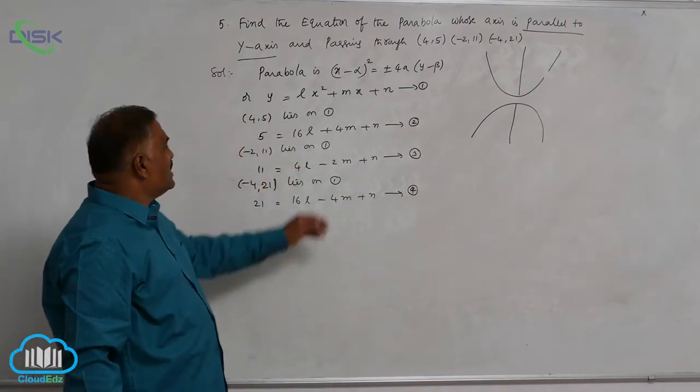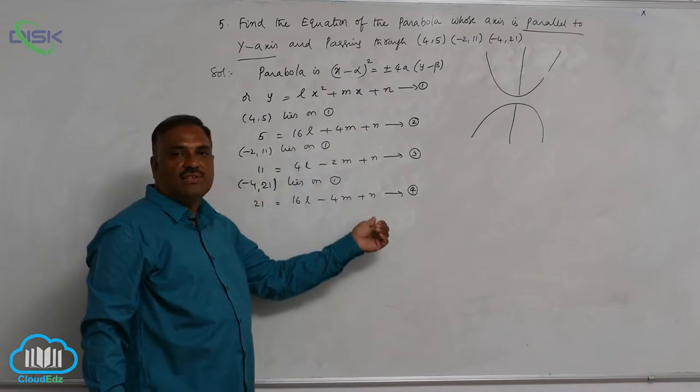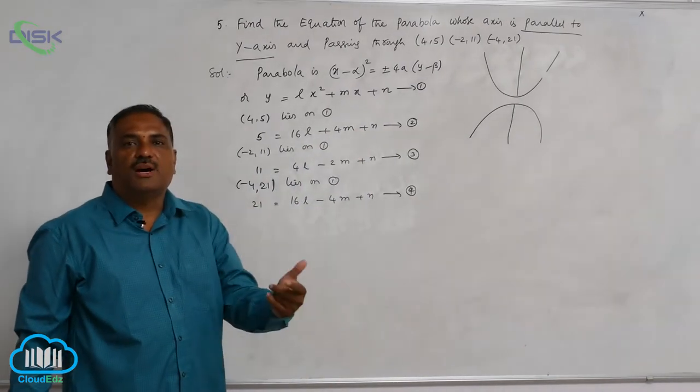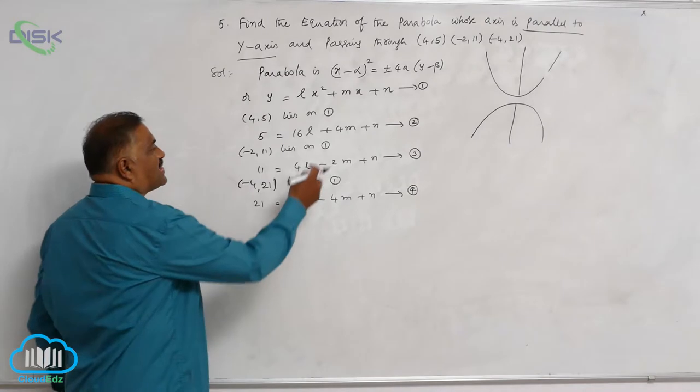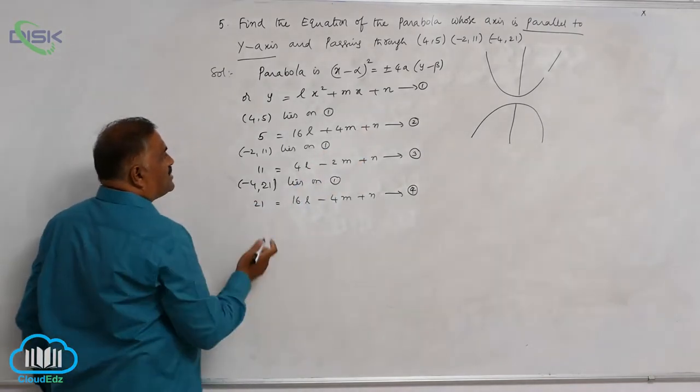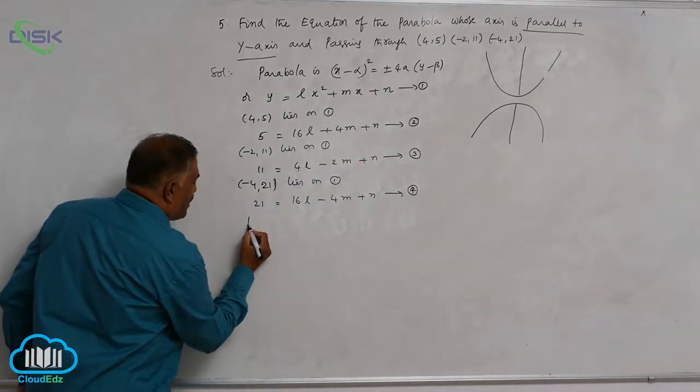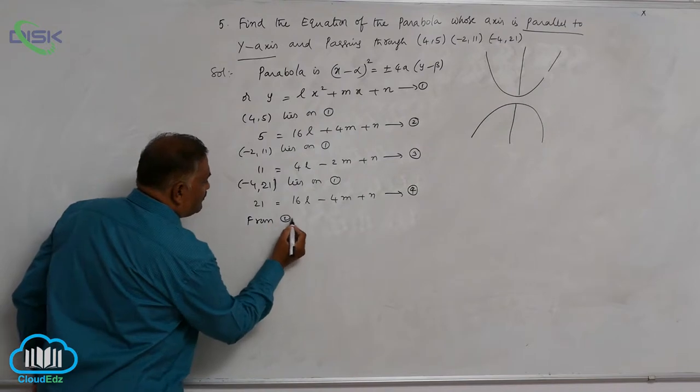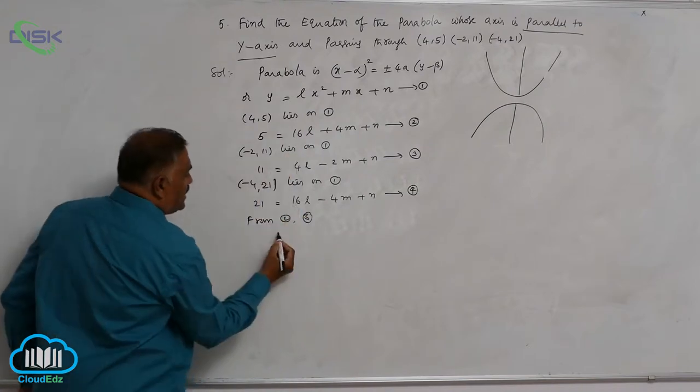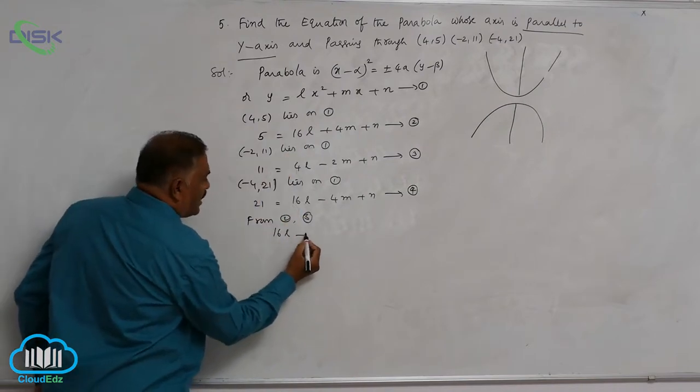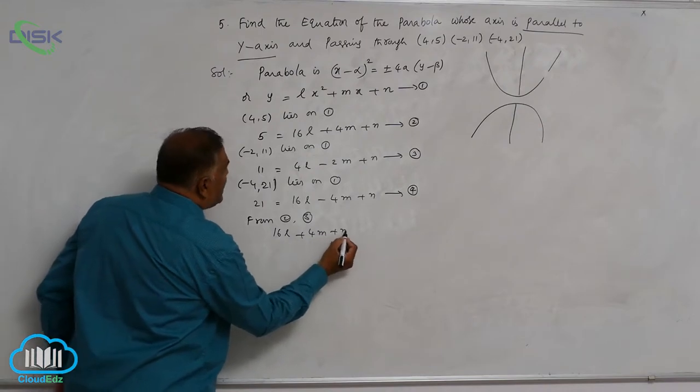Now we need to solve these three equations to get the unknowns l, m, n. Let us consider these two equations, 2 and 3. Now let us say 16l plus 4m plus n is equal to 5.